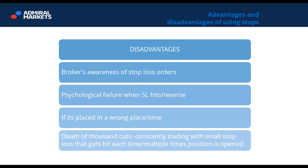Another disadvantage is psychological failure when a stop loss hits and reverses. Many of us have experienced this: when your stop is hit, you have the urge to open a revenge trade. Usually that results in a streak of losses for the day, because psychological breakdown after five consecutive losing trades will make you open one more trade with triple the leverage. That's not trading — it becomes gambling, hope trading, or revenge trading.